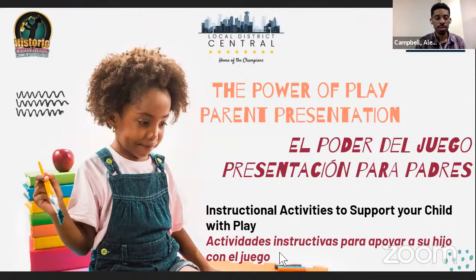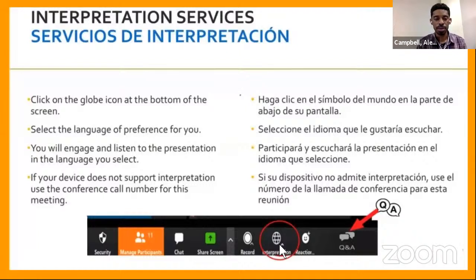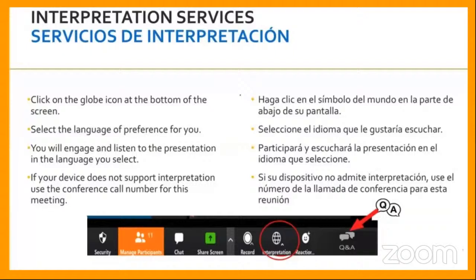We have interpretation services available for you today. If you'd like to hear the presentation in Spanish, please click on the globe icon at the bottom of your screen, select the language of preference, and you will listen to the presentation in the language you select. If your device does not support interpretation, use the conference call number for this meeting. En español, haga click en el símbolo del mundo en la parte de abajo de su pantalla, seleccione el idioma que le gustaría escuchar — en este caso español — y participará y escuchará la presentación en el idioma que seleccione. Si su dispositivo no admite interpretación, podrá usar el número de la llamada de conferencia para esta reunión. Gracias.